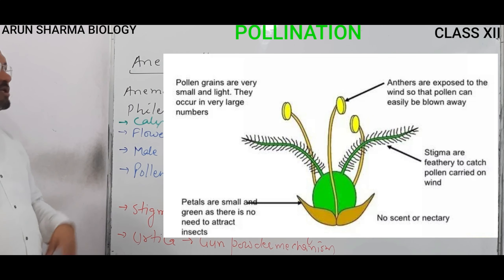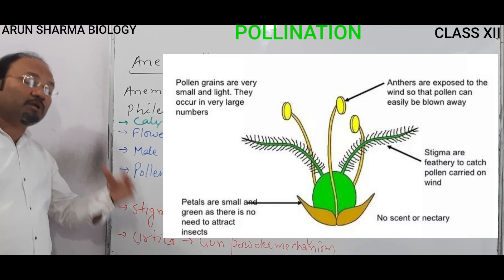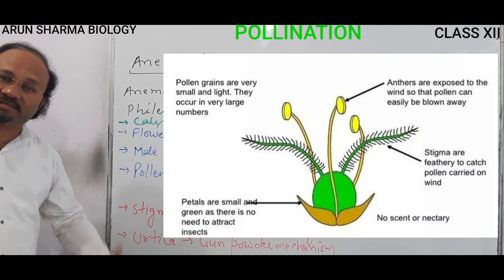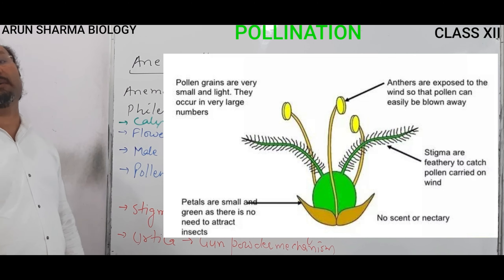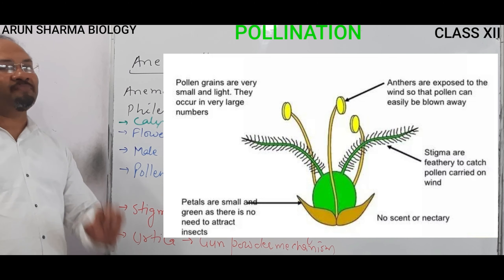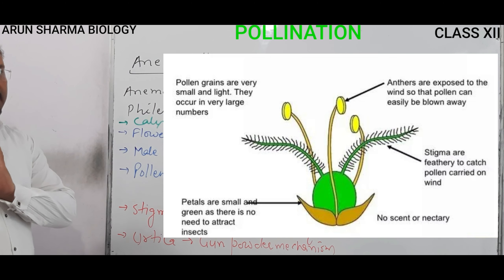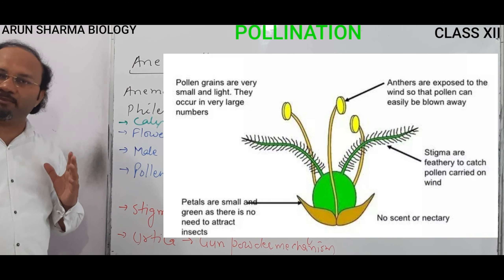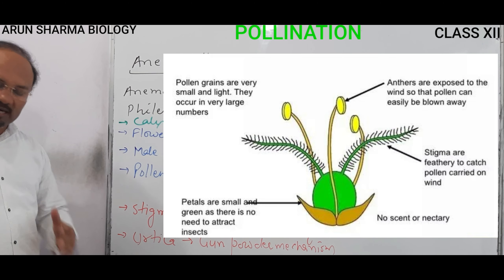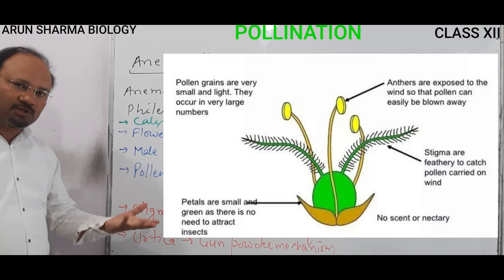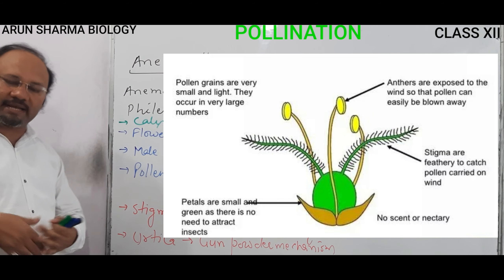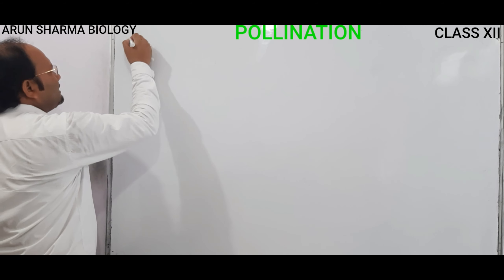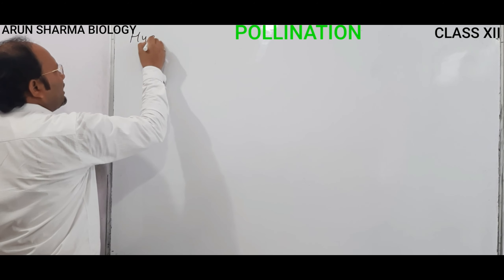To recap: calyx and corolla are reduced, flowers are inconspicuous and odorless, male flowers are more in number, pollen grains are light and colorless, stigma is hairy, flat, feathery, and well exposed. A very famous example for anemophily is maize. Now we move on to hydrophilous flowers.